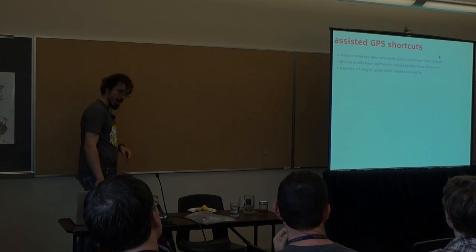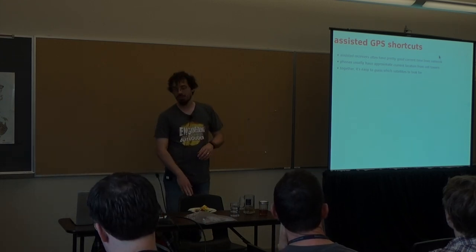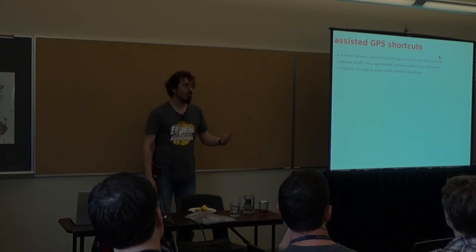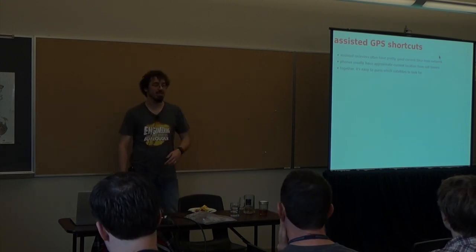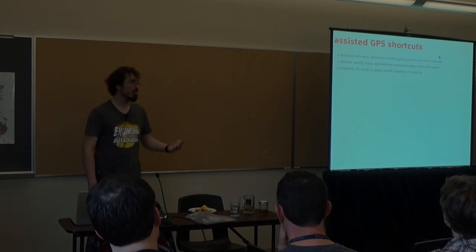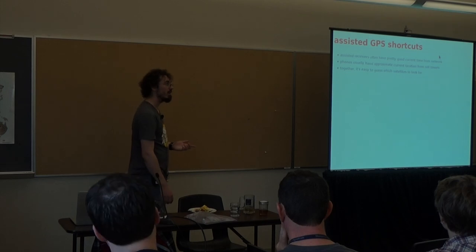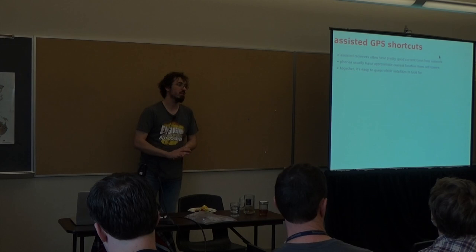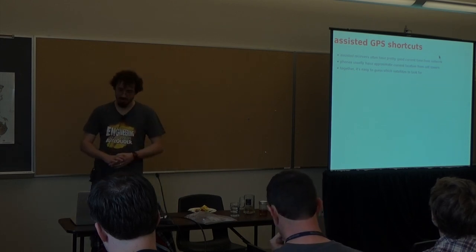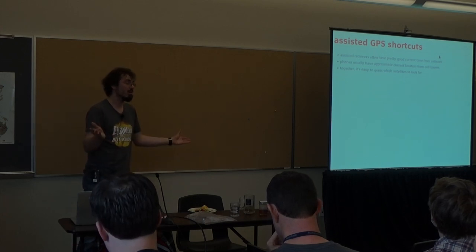And when you're in this assisted GPS setting, you have a number of shortcuts you can take. You often have a pretty good source of time from the network, either from the cell phone network, or just, you know, using NTP. So that's one of those requirements for Hot Start, right? Phones often can also get, you know, approximate location from just looking at what cell tower they're connected to. So, that's another of those requirements for Hot Start. And then, together with having the internet connection to pull out ephemerides. You're both?